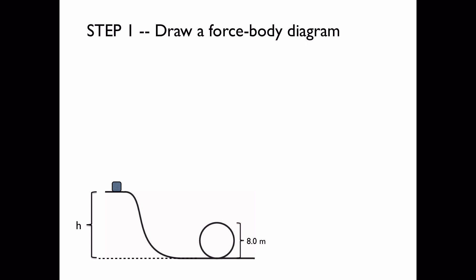Step 1 will be to draw a force body diagram of the block when it's at the top of its path. We have the block in contact with the ramp because we're assuming that the block is still in contact with the ramp. And we have the gravitational force which acts at the center of the block to pull it downwards.